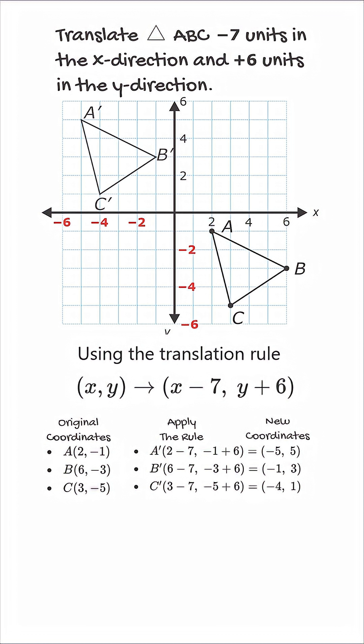Which means take each original x value and subtract 7 and take each original y value and add 6. For any point, we just have to subtract 7 from the x value and add 6 to the y value. This gives you the same final triangle without needing to slide.